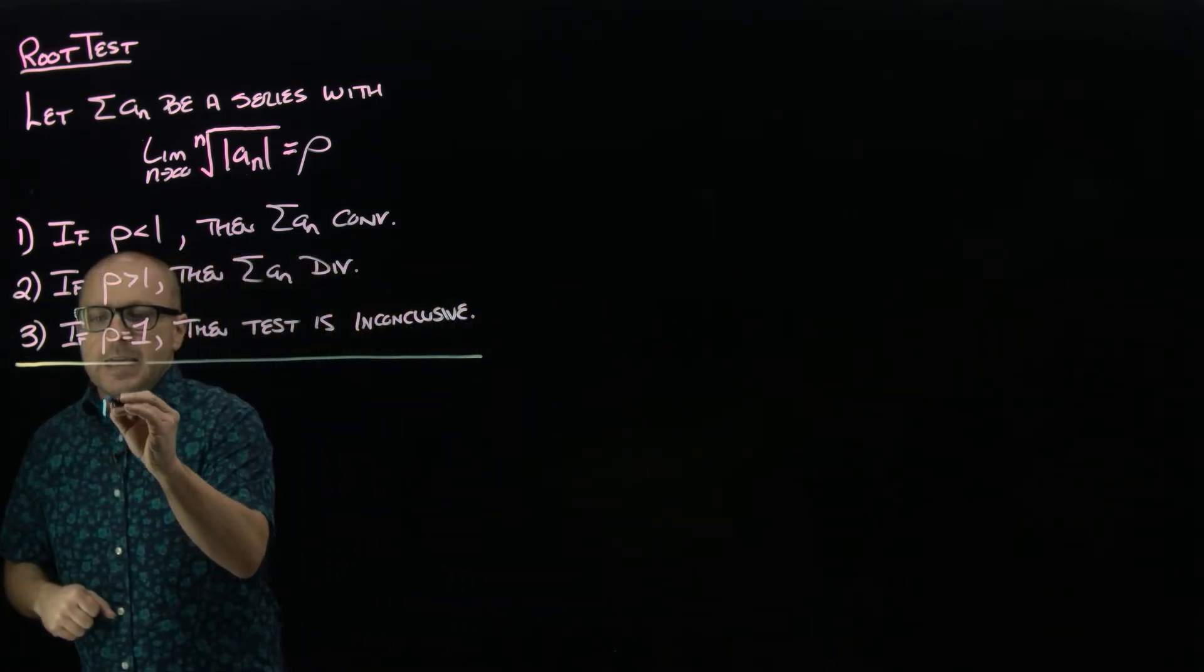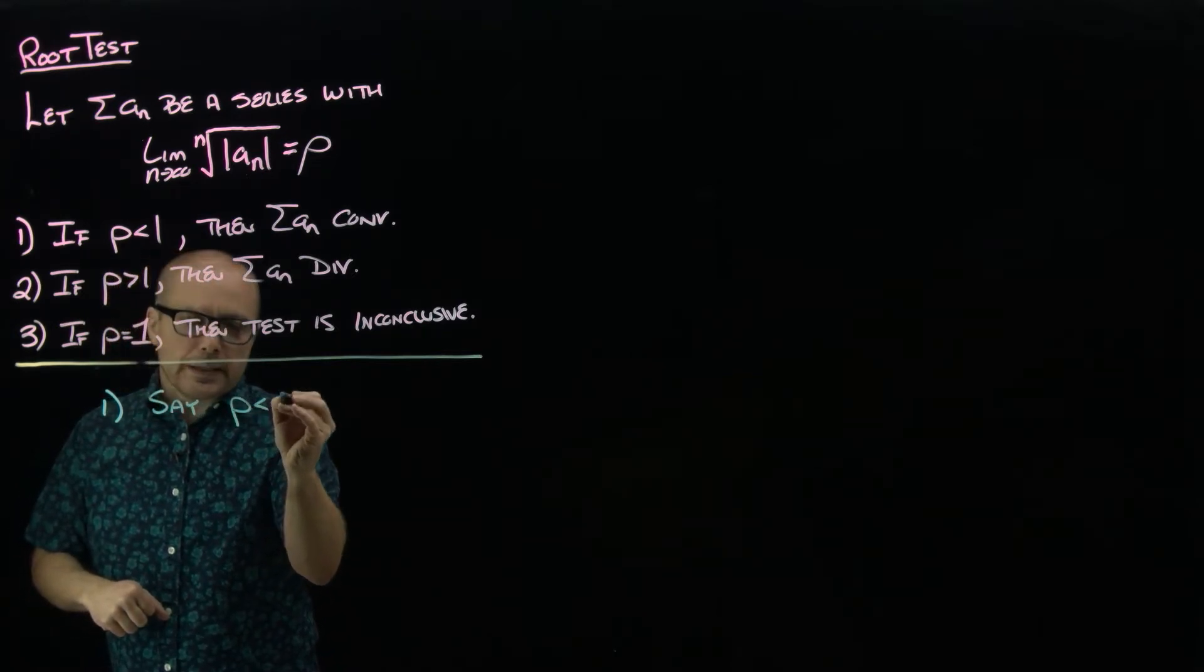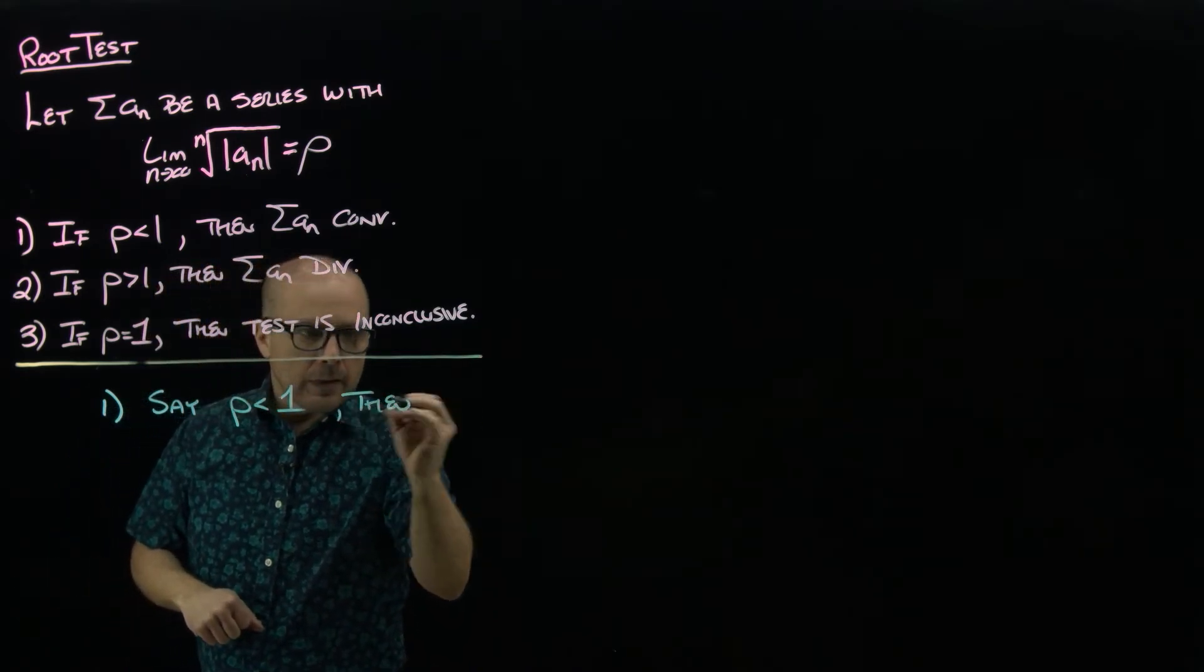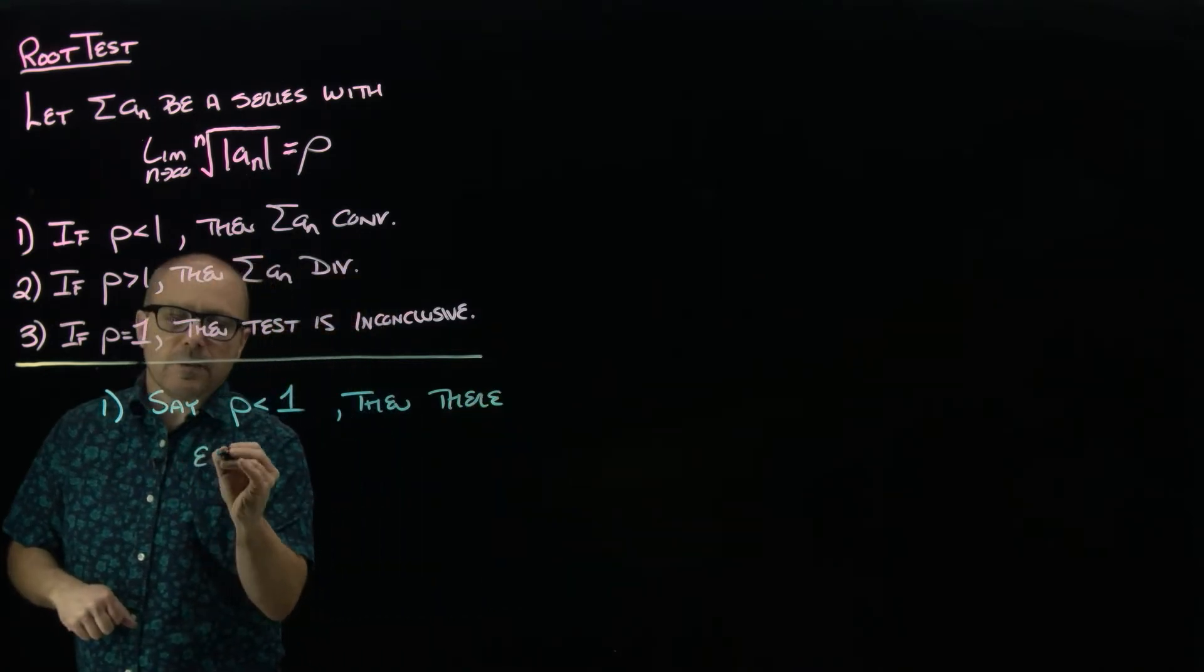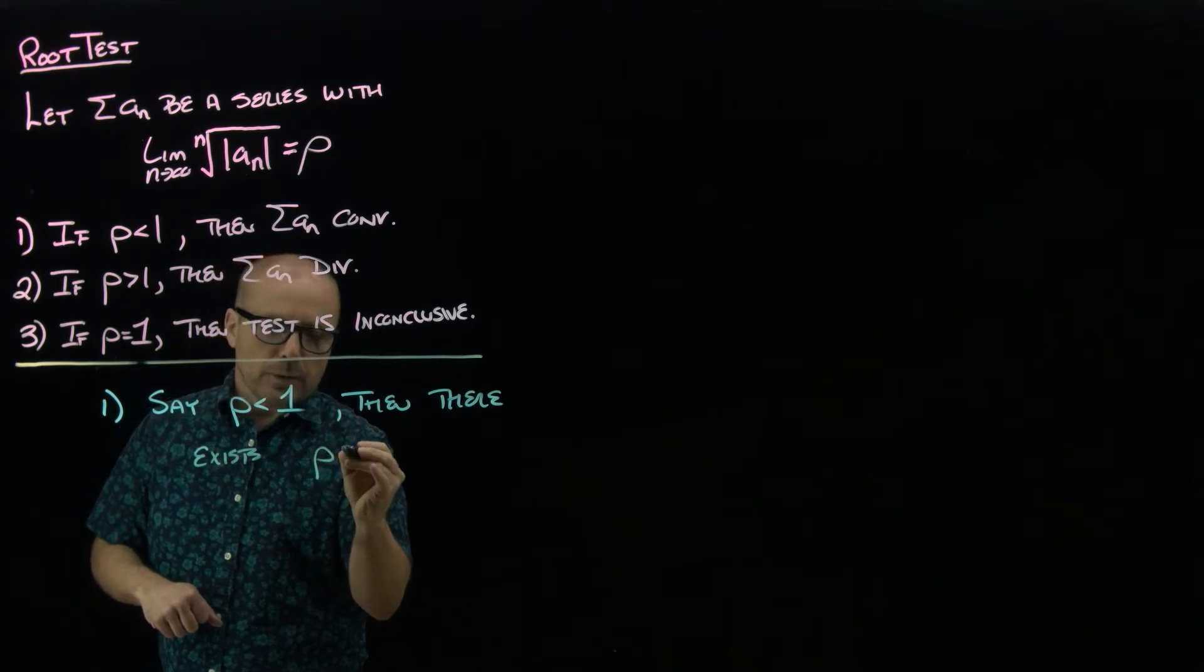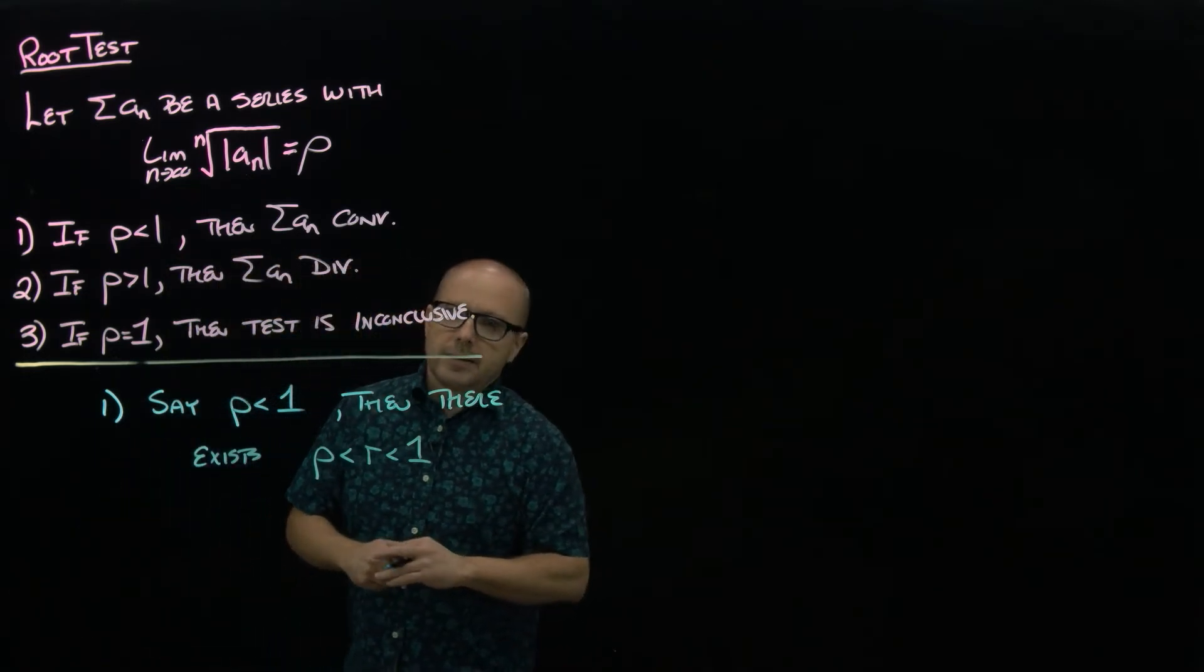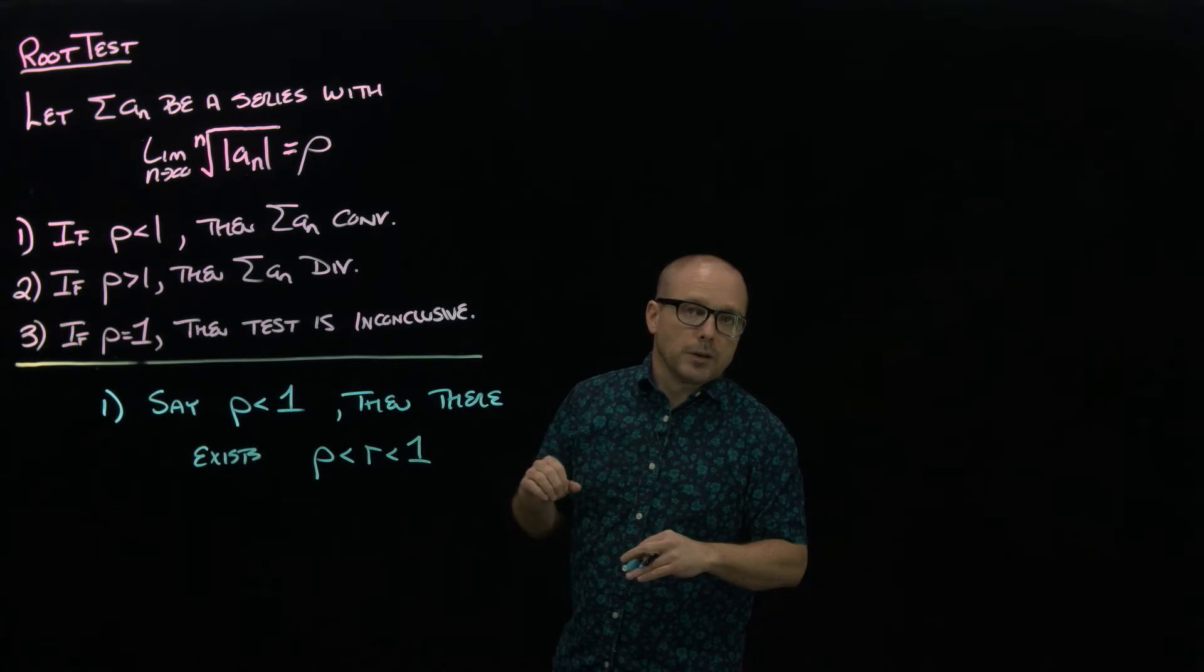So let's say ρ is less than one. Then again, it's the same idea: I can find a number—because the real numbers, there's always some number in between—so I can find an r that is less than one but still bigger than ρ.